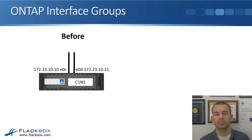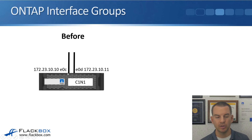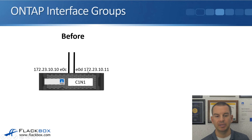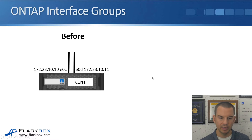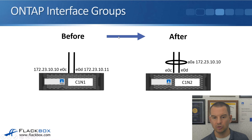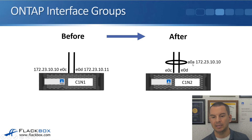Looking at how interface groups work in ONTAP, in the first diagram example we're not using interface groups: physical port E0C has IP address 172.23.10.10, and E0D has 172.23.10.11. When we bundle E0C and E0D into an interface group, that creates the interface group interface.